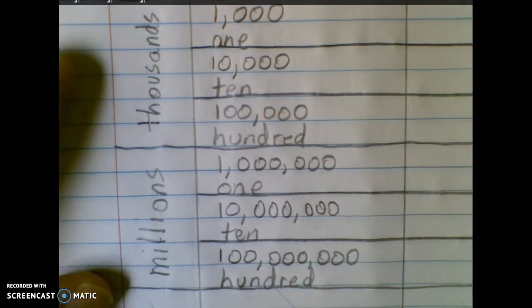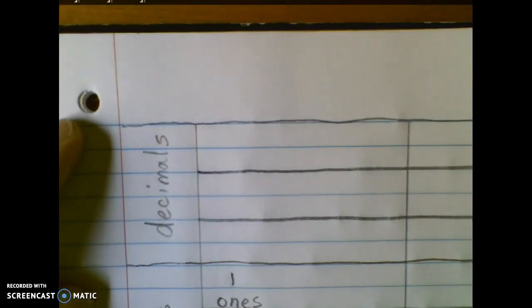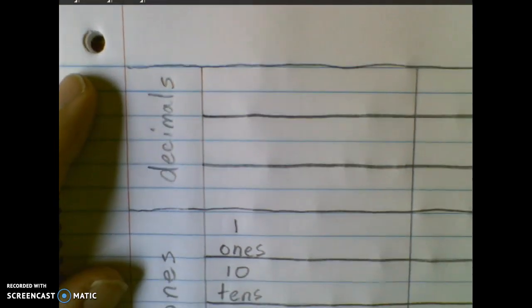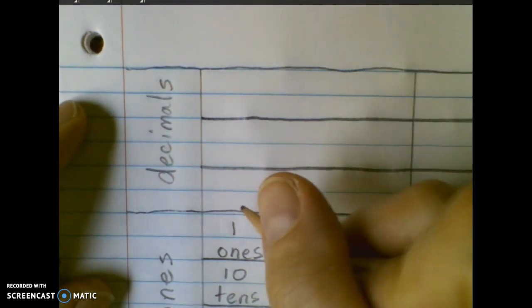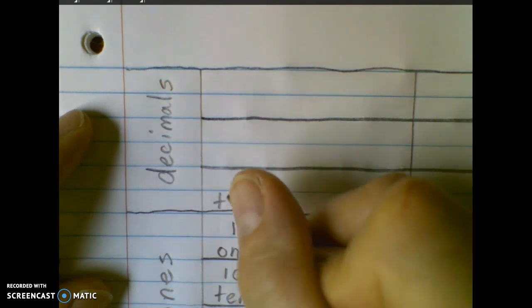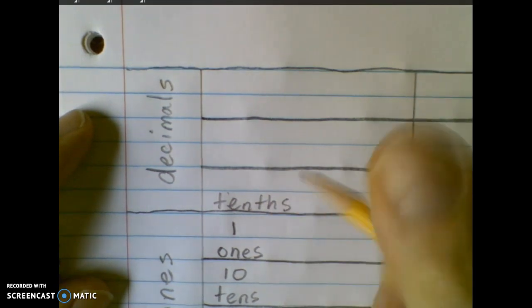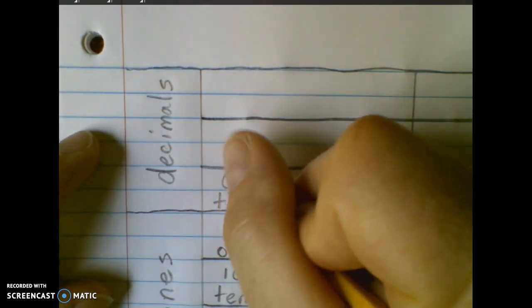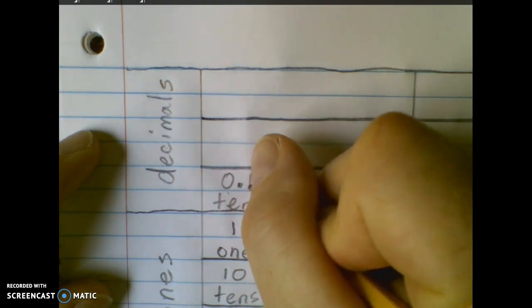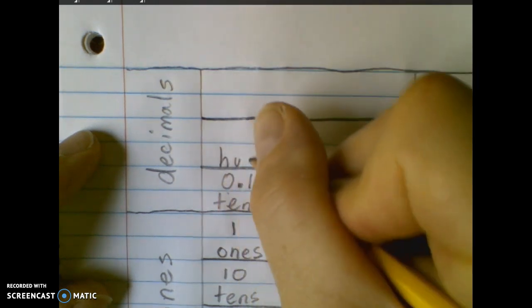The pattern changes slightly when we go to the decimals. In this decimal period we have the tenths place, we'll represent that with a one in the tenths place, and the hundredths place.